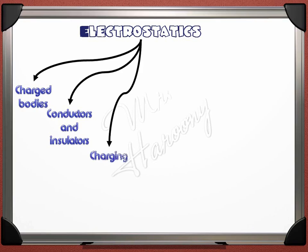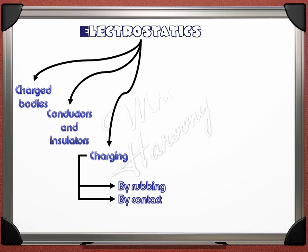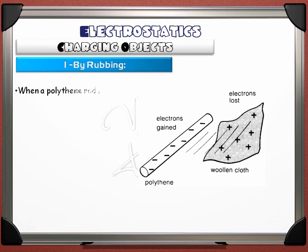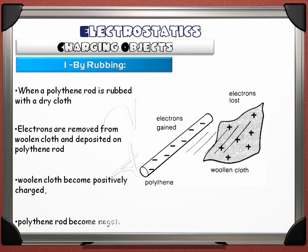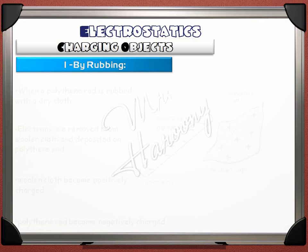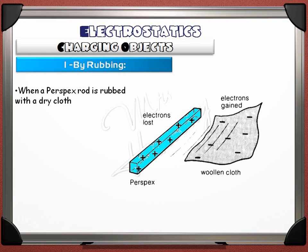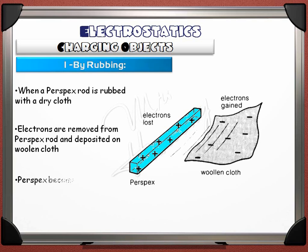The third part in this lecture is methods of charging different objects. Three methods: charging by rubbing, charging by contact, and charging by induction. Charging by rubbing: when a polythene rod is rubbed with a dry cloth, electrons are removed from the woolen cloth and deposited on the polythene rod. The woolen cloth becomes positively charged and the polythene rod becomes negatively charged. But when a perspex rod is rubbed with the dry cloth, electrons are removed from perspex and deposited on the woolen cloth — perspex becomes positively charged and the woolen cloth becomes negatively charged.